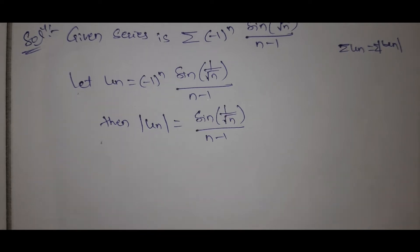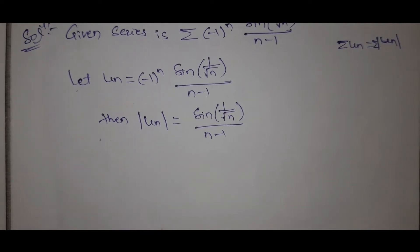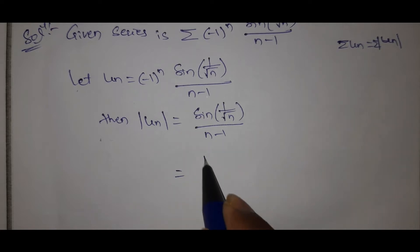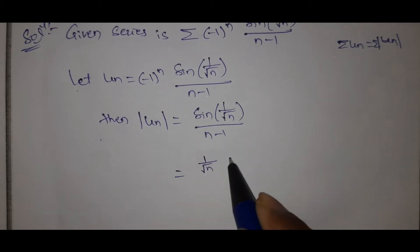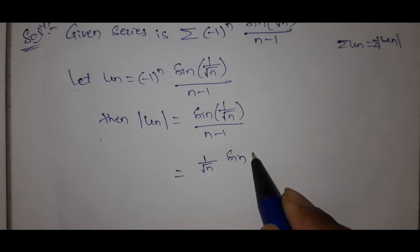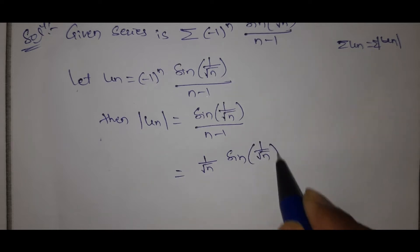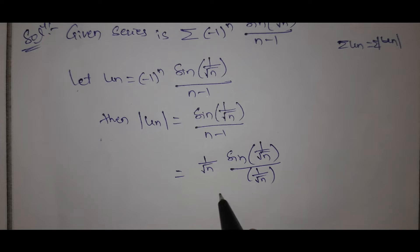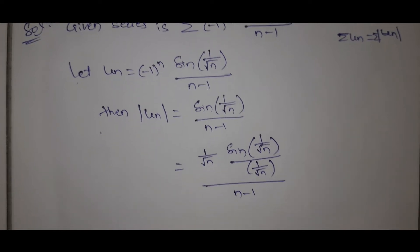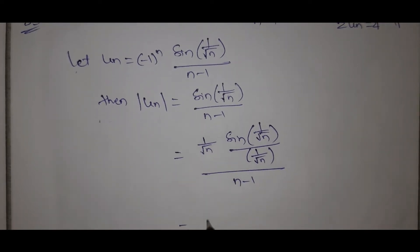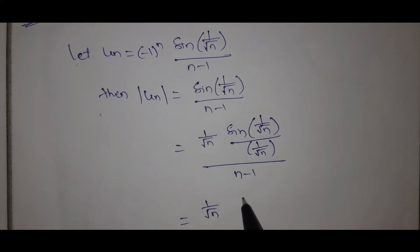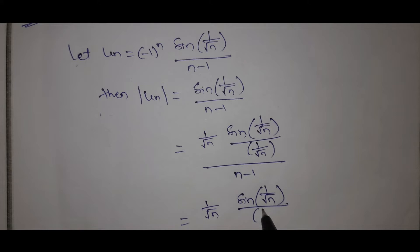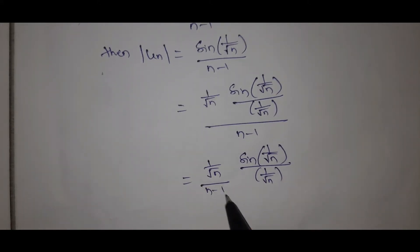I will show you what to do with the comparison test. |u_n| = (1/√n) · sin(1/√n) / (n-1). That is, (1/√n) · sin(1/√n) divided by (n-1).